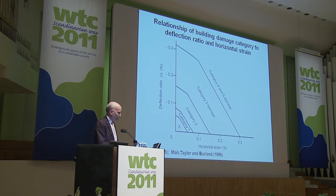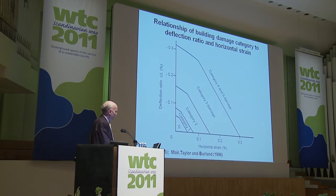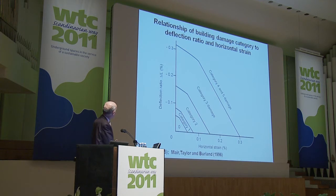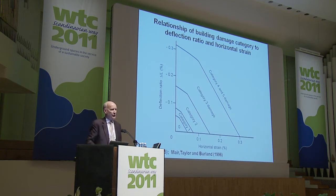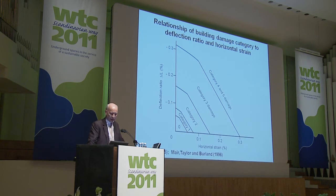This is important because there are many ways of defining building damage — different increasing categories of damage — where we can plot the deflection ratio against the average horizontal strain in the building. Depending on these values, there are different increasing categories of damage to buildings.